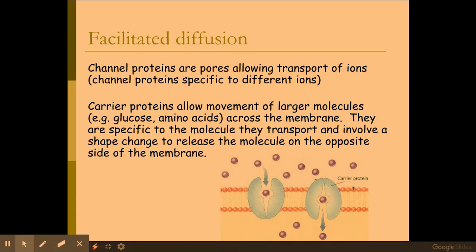The next one is facilitated diffusion, where we have channel proteins. Channel proteins allow the movement of ions across the membrane. Anything that's ionic, has a charge, or is large cannot diffuse straight through the phospholipid bilayer — so ions use channel proteins to go through the membrane, still from a high to a low concentration. Carrier proteins allow the movement of larger molecules such as glucose and amino acids across the phospholipid bilayer. Because they're too large to diffuse straight through, they must go through a carrier protein.